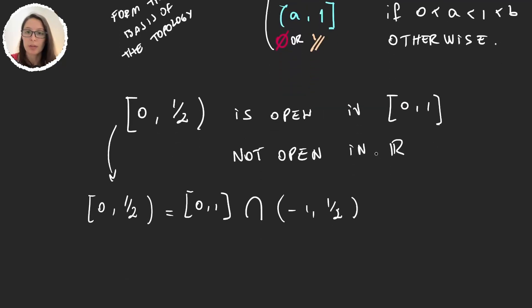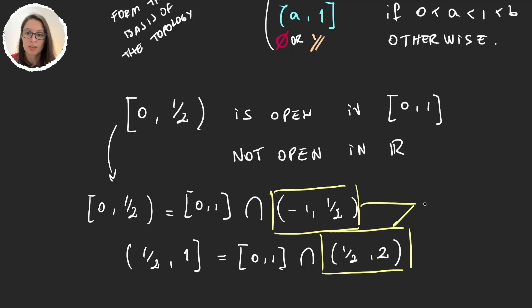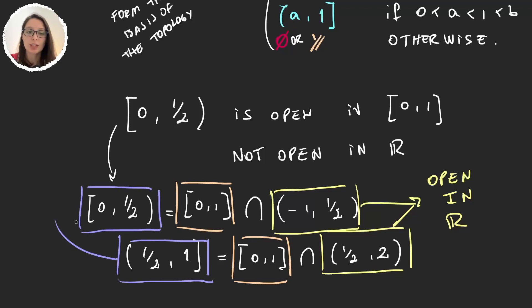The same would happen with intervals like, for example, (1/2,1]. This one can be written as [0,1] intersection (1/2,2). And so they are open in the [0,1] because these two sets are open in the real line. So the intersection of the [0,1] with sets that are open in the real line gives us sets that are open in the [0,1]. So this example shows us that the subspace topology can be a bit more complicated than the usual topology we had in our original space.